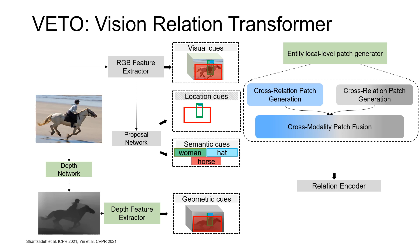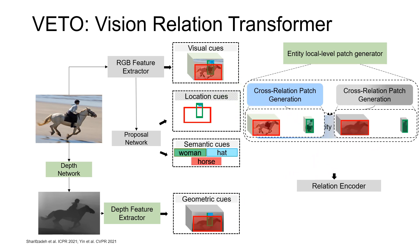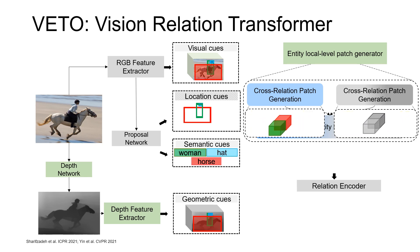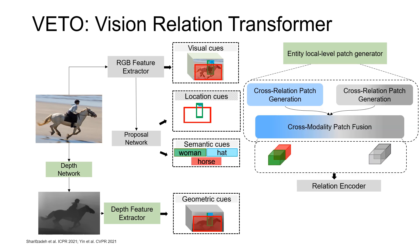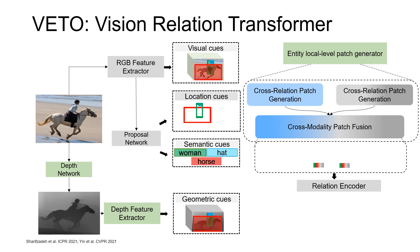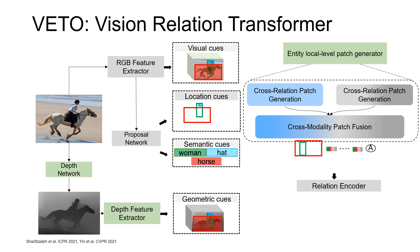Visual cues of the subject and object entities go through the cross-relation modules where they are pooled, fused, and passed to the cross-modality patch fusion module, where each modality is split into multiple blocks channel-wise. The resulting blocks are projected and fused to form input tokens, each containing a smaller portion of the entity — in contrast to conventional SGGs where each token represents the entire entity. The location and semantic cues of the subject and object entities are fused as additional input tokens.